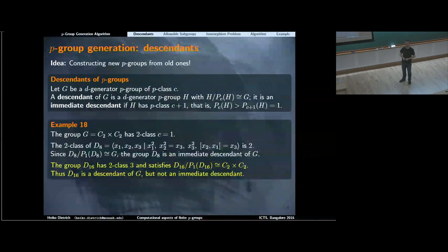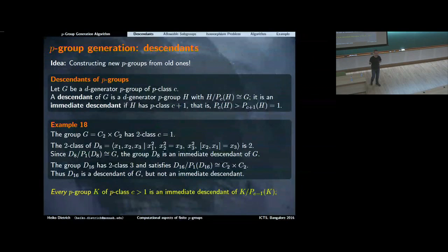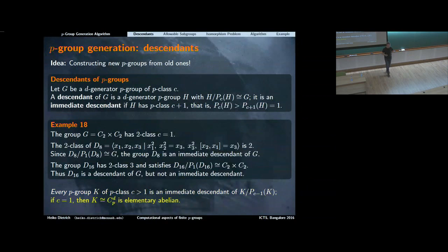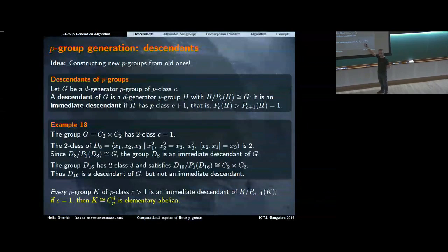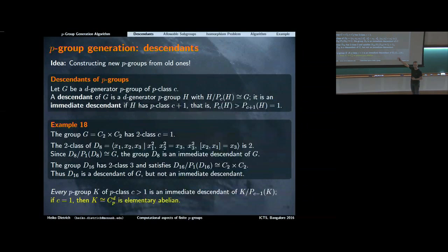Here is an important point: if you take any p-group of p-class greater than one, then it is an immediate descendant of some other p-group. P-groups of p-class one are elementary abelian, so every p-group is either elementary abelian or an immediate descendant of a smaller p-group. If you want to construct all p-groups, you can use this fact by constructing immediate descendants iteratively. This is what p-group generation is about — it allows us to construct immediate descendants.